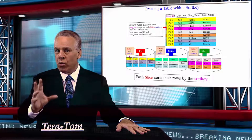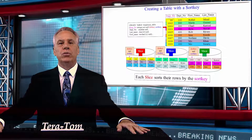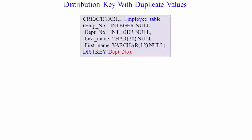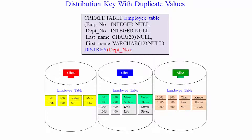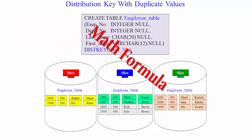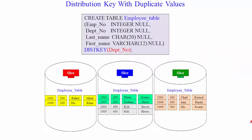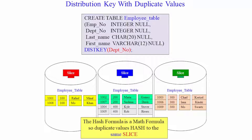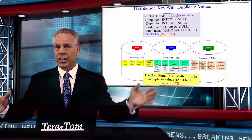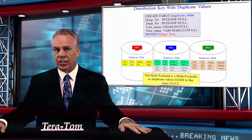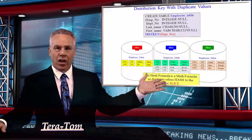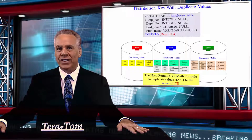Now this is the second really important feature. We're going to show the same employee table, but we're going to make the distribution key the department number. Take a look at these rows — it's very important that you understand this concept. We use one mathematical formula on department number to spread the rows across the slices, but you can see here that all of the people in the same department went to the exact same slice. So you are going to get some data that's not evenly distributed among the slices, because all of the matching departments end up on the same slice.